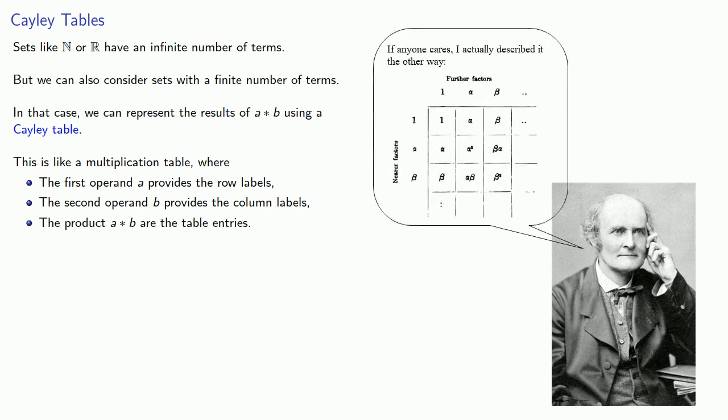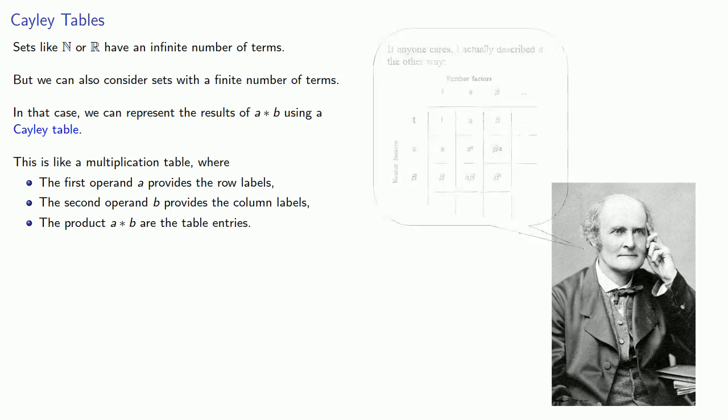Now, fair warning, in Cayley's original description, the first operand was actually the column labels, and the second operand was the row labels. And some authors will use their Cayley tables as Cayley wrote them. So whenever you see a Cayley table from a new author, it's important to identify which of the two conventions they're using.